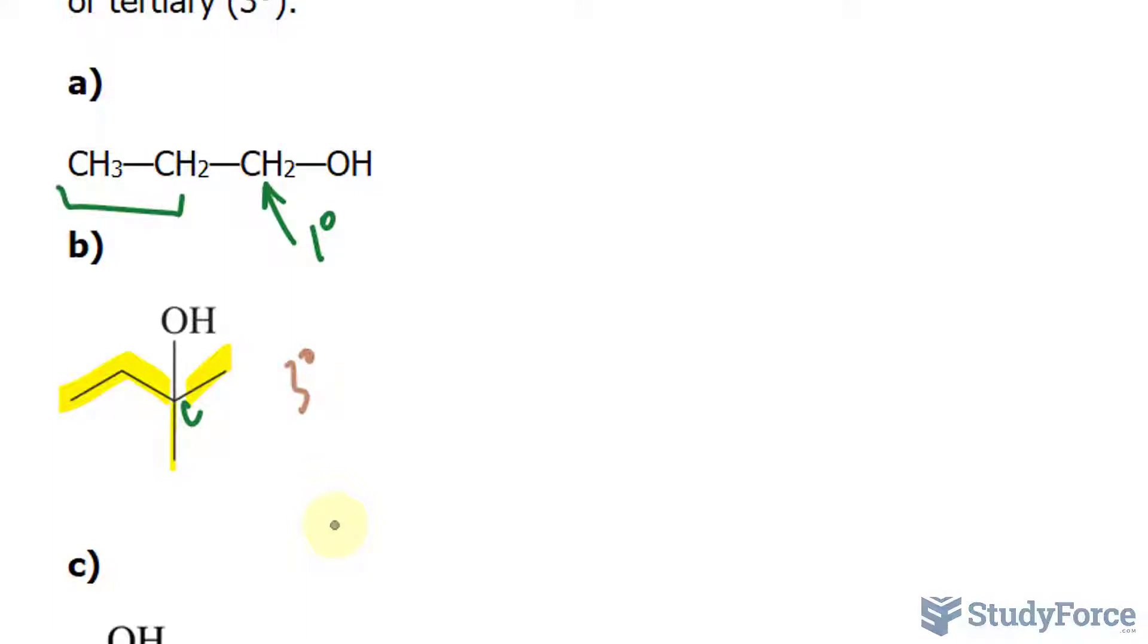So, the amount of bonds that are immediately attached to the carbon that's bonded to the OH tells us whether it's primary, secondary, or tertiary.